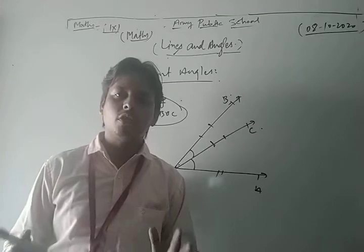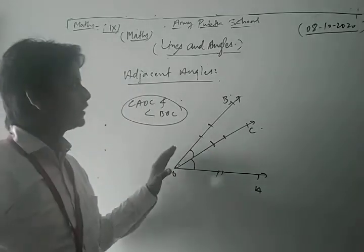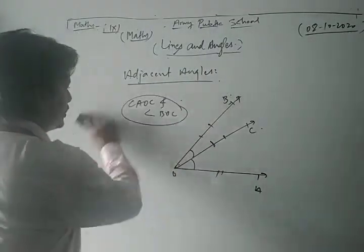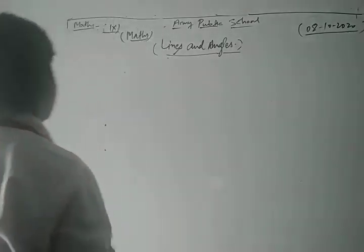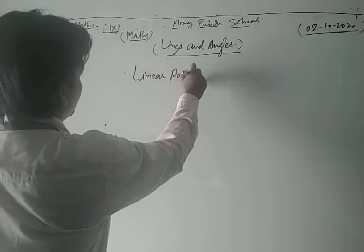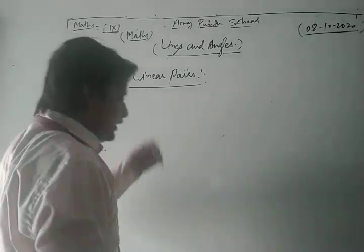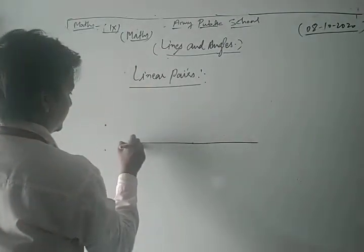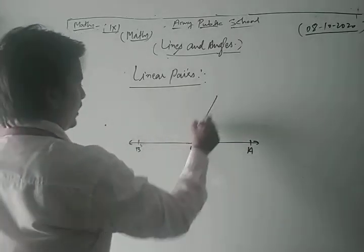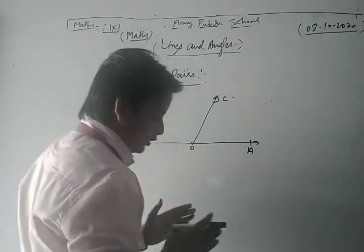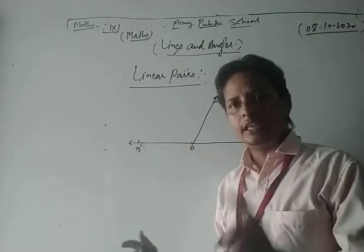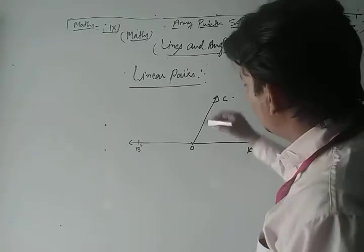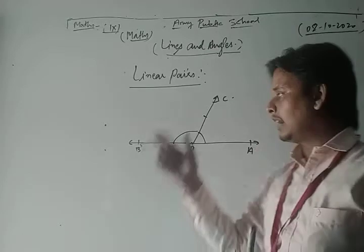Now we discuss the concept of linear pair. Two adjacent angles are said to be a linear pair if and only if they have the common vertex O, they have the common arm OC — since angle AOC and angle BOC both have the common arm OC.